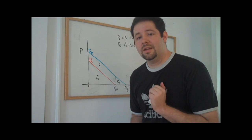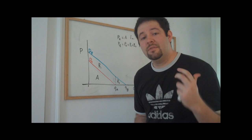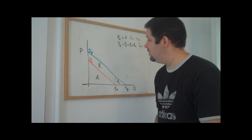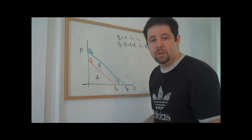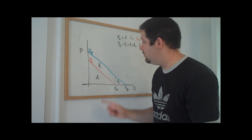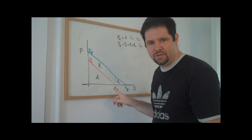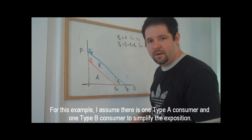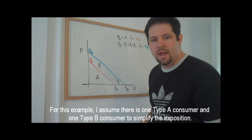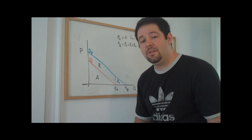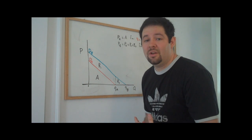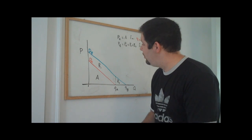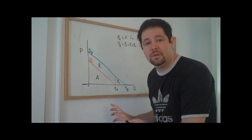Let's consider a case where we have two types of demand curves, so we have two types of consumers. We have DA, who are low demand consumers — this is their demand curve, which is the red demand curve here. We have DB, which is a higher demand curve, and the monopolist would love to do what we did in the last video, where we explained how we could do a two-part pricing to extract all of the consumer surplus.